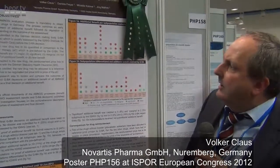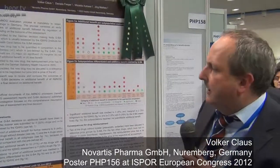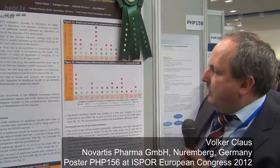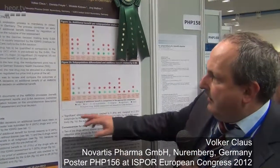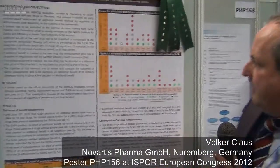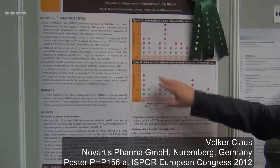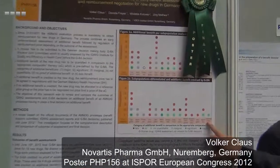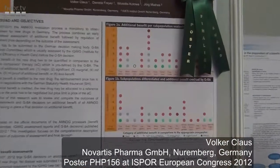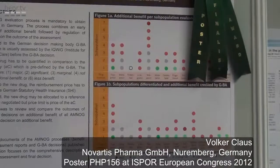As you may know, in Germany the AMNOG — the early benefit assessment — has been in place since the 1st of January 2011, and up to the deadline of June 2012 we had 14 decisions on additional benefits for new drugs.